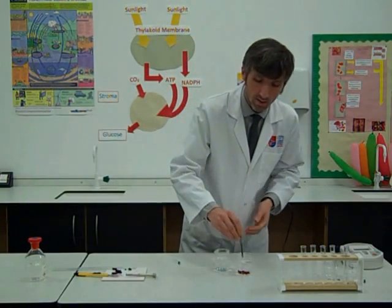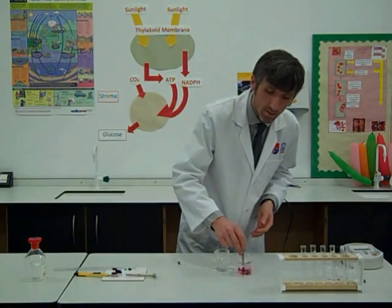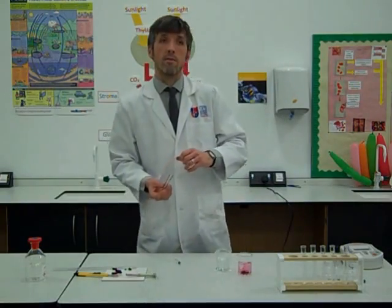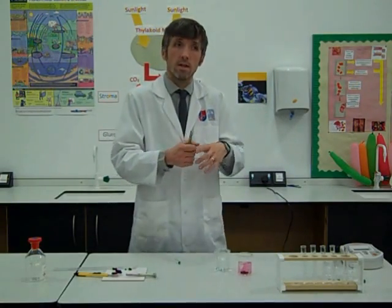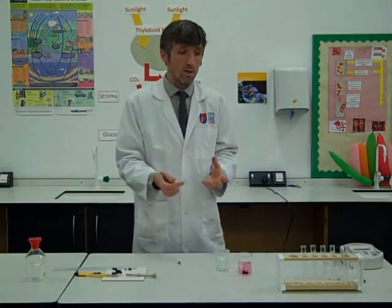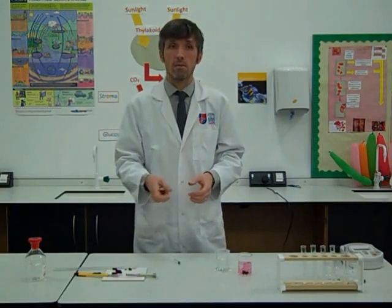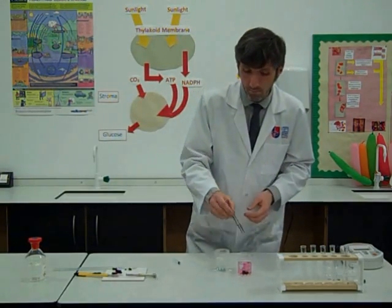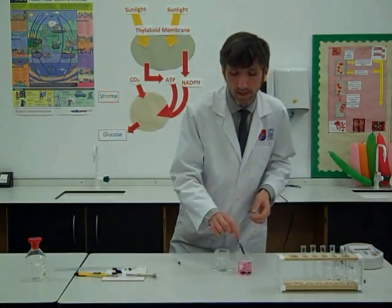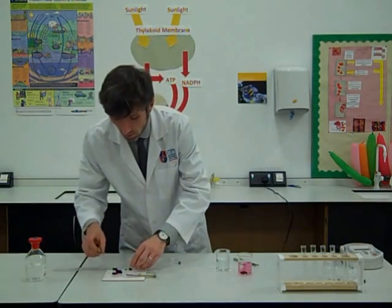So we're going to wash the beetroot pieces to make sure that any pigment that is leaking out of those damaged cells comes out before we start using them in the experiment, and therefore it makes our results much more reliable. We'll leave those in for just a couple of minutes.